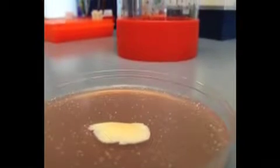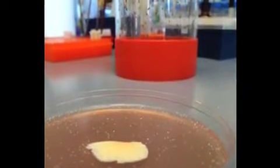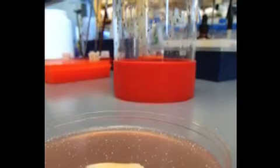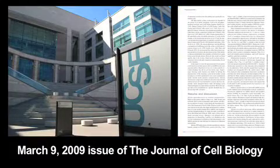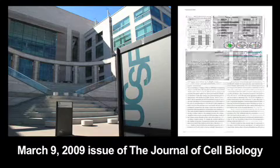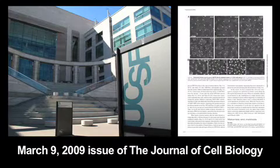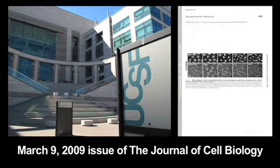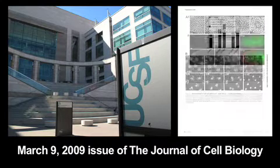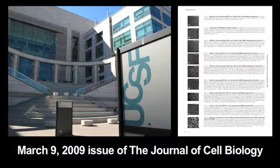But what controls the timing of this cell cycle progression? And is it one regulator? Or does this change with development? In the March 9th issue of the Journal of Cell Biology, a group at UCSF investigated the role that mitotic cyclins play in controlling cell cycle progression in the early Drosophila embryo. Here's Dr. Patrick O'Farrell, who is the senior investigator of this study.